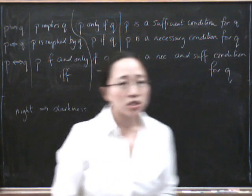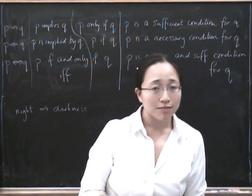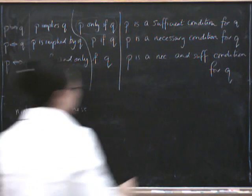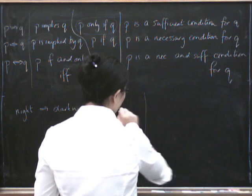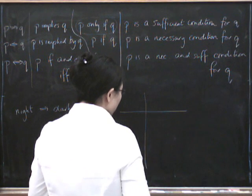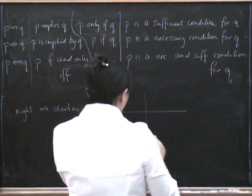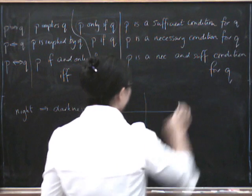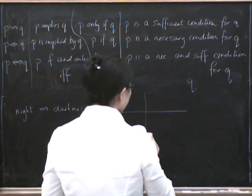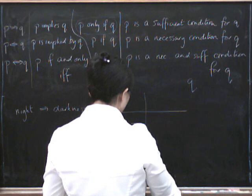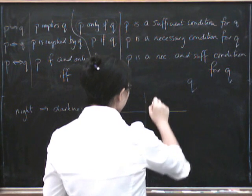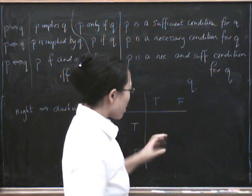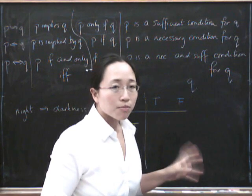So another thing that we could do to try and understand these implications a bit better is that we could draw a truth table. I like truth tables. So here is a truth table. How am I going to write this truth table? So here we've got the truth of P, and here we've got the truth of Q. So P is either true or false, and Q is either true or false.